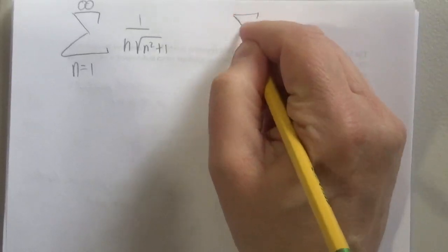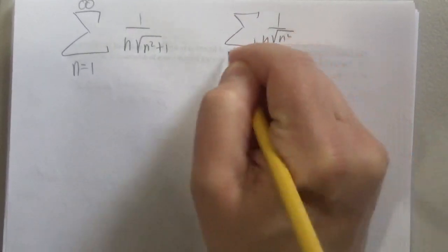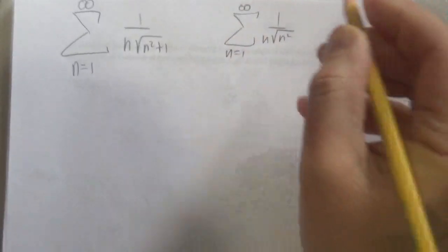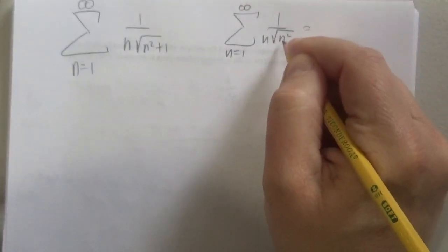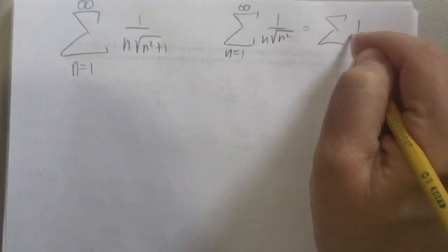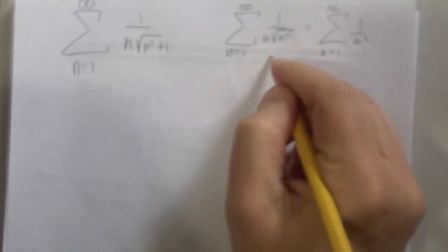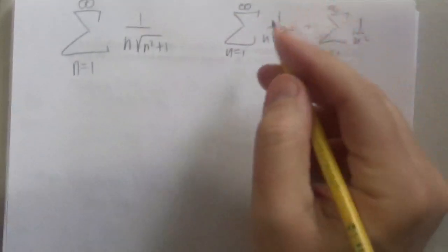So I'm really going to use this series: 1 over n times the square root of n squared, n equals 1 to infinity. Hopefully we're all okay with the square root of n squared is n, so if I multiply those two I get 1 over n squared. You didn't really need to do this little step right here, but I just thought I'd make it clear.